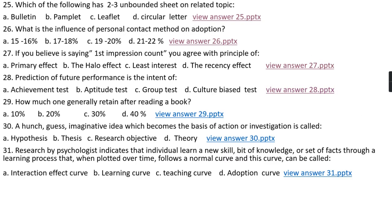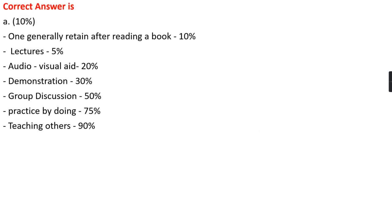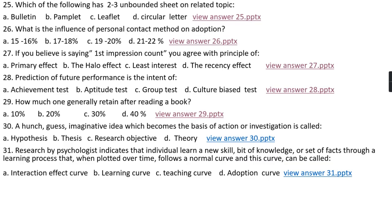Question number twenty-nine: How much does one generally retain after reading a book? Option A, 10 percent; option B, 20 percent; option C, 30 percent; option D, 40 percent. The right answer is option A, that is 10 percent. One generally retains 10 percent after reading a book. From a lecture, a person retains only 5 percent. With audio-visual aids, 20 percent. Through demonstration, 30 percent. Through group discussion, 50 percent. By practicing by doing, 75 percent, and if they are teaching others what they learned, they retain 90 percent.